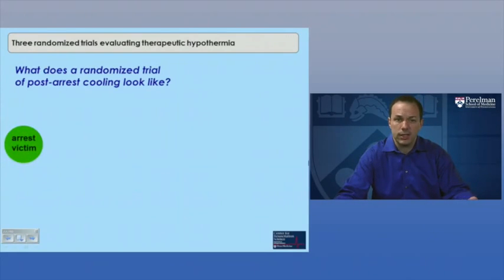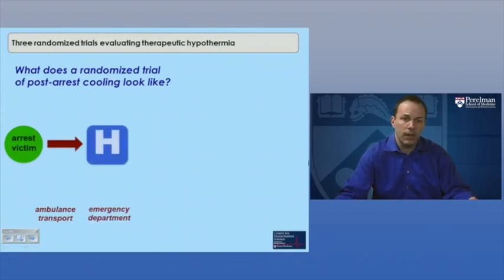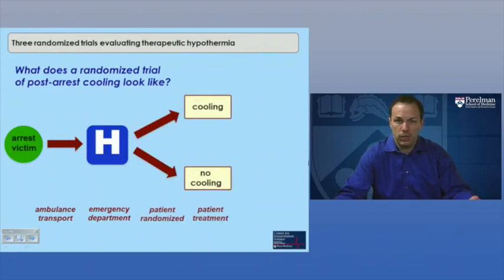In the setting of cardiac arrest, a study might look like this. And these are the randomized trials I'll share with you. An arrest victim is transported by ambulance to an emergency department in a hospital. Now, in that emergency department, they are then randomized. Essentially, a coin is flipped. And they are either treated with hypothermia or not treated with hypothermia.